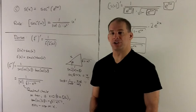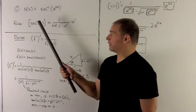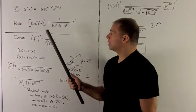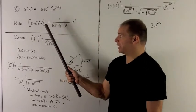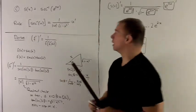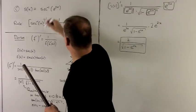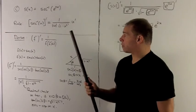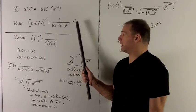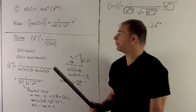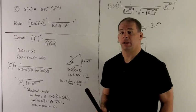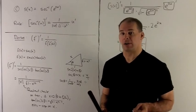Let's finish up with an inverse secant — not likely you'll see this one, but you never know. We take the derivative of s of x equal to inverse secant of e to the 2x. The rule for the derivative of inverse secant of u is 1 over the absolute value of u times radical 1 minus u squared, that quantity times u prime. We derive this from first principles, as usual, in case you forget it.